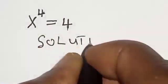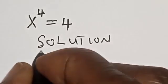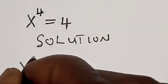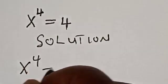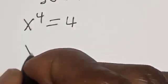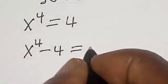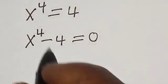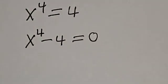Solution. x raised to power 4 is equal to 4. Let's bring this 4 to this side: x raised to power 4 minus 4 is equal to 0. We want to find the possible values of x.